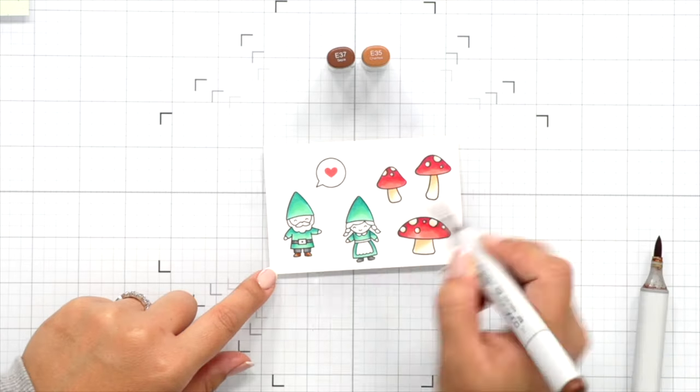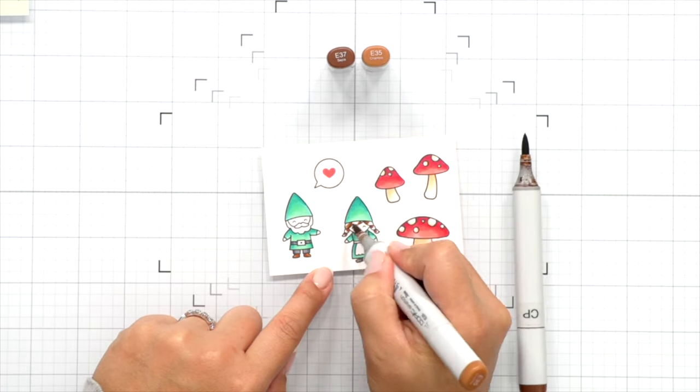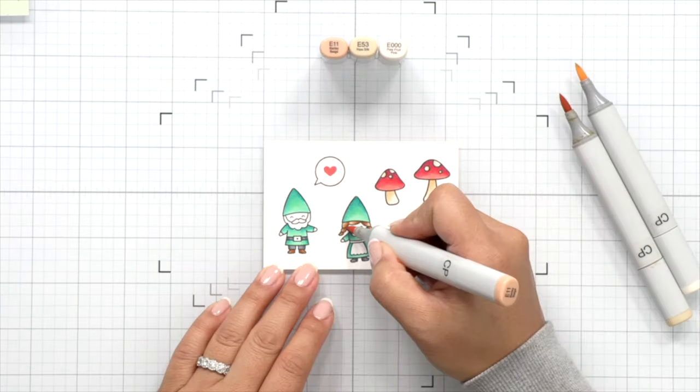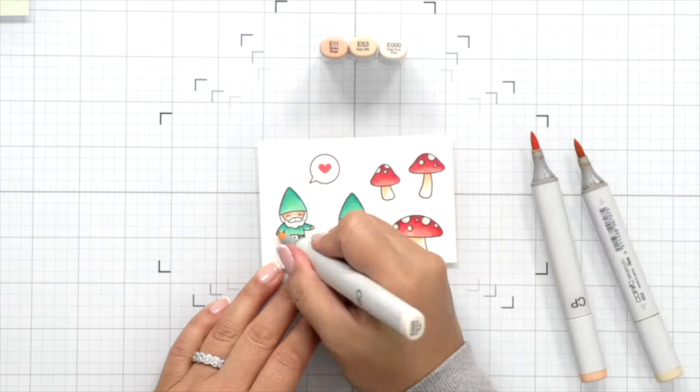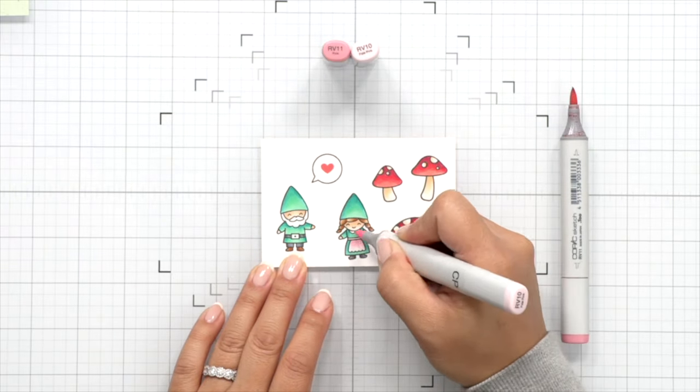For the details on the boots, the male gnome's pants and belts, I'm using some browns and grays. Then I'll finish up with their faces and add some pink for her little apron.